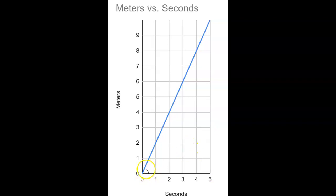Now, this is a nice, steady situation — constant velocity — and every second you go exactly two more meters. But if you've ever been in a car, you know that's not really how things always are. Sometimes the velocity is constantly changing. So what do we do in a situation like that?